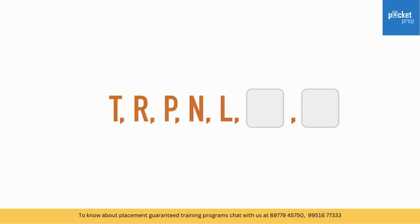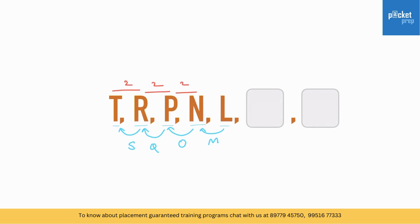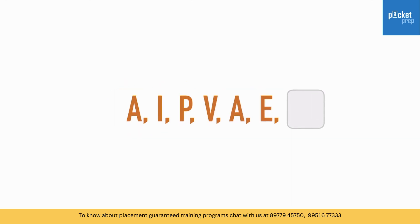First alphabet series question: T, R, P, N, L. The alphabets are decreasing with a difference of 2 between positions. So continuing the pattern, the next terms are J and H.